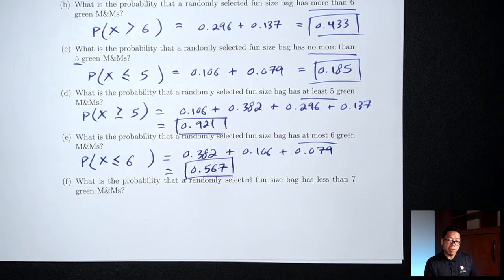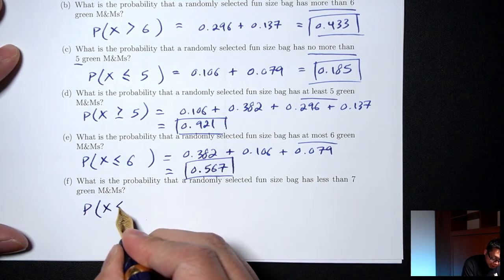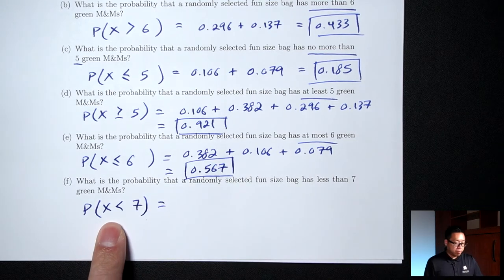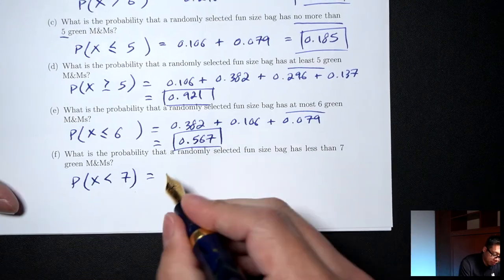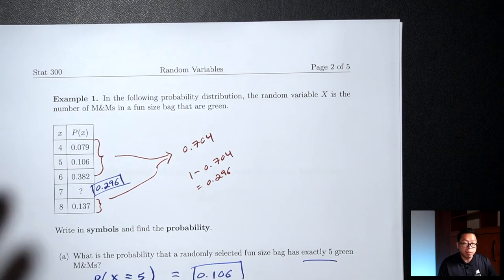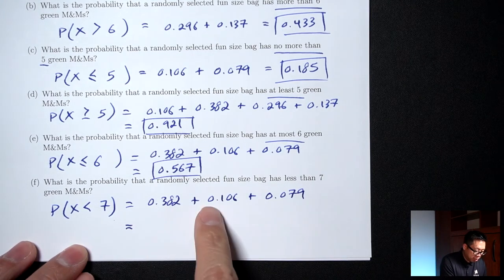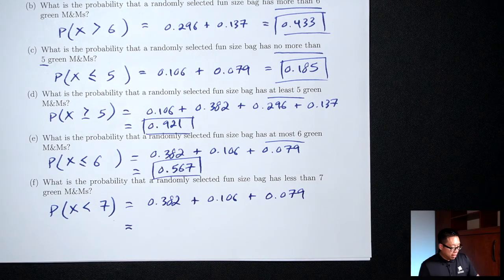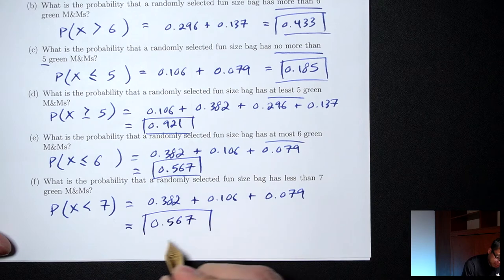Part F: What's the probability a bag has less than 7 green M&Ms? 'Less than 7' is X < 7 — no equals sign, so don't include 7. That gives x = 6, 5, and 4: 0.382 plus 0.106 plus 0.079. By coincidence, these are the same three numbers as Part E, so the answer is again 0.567.